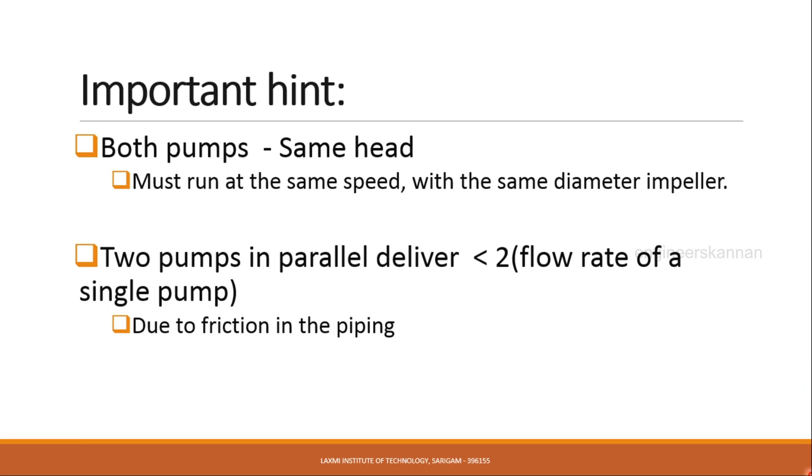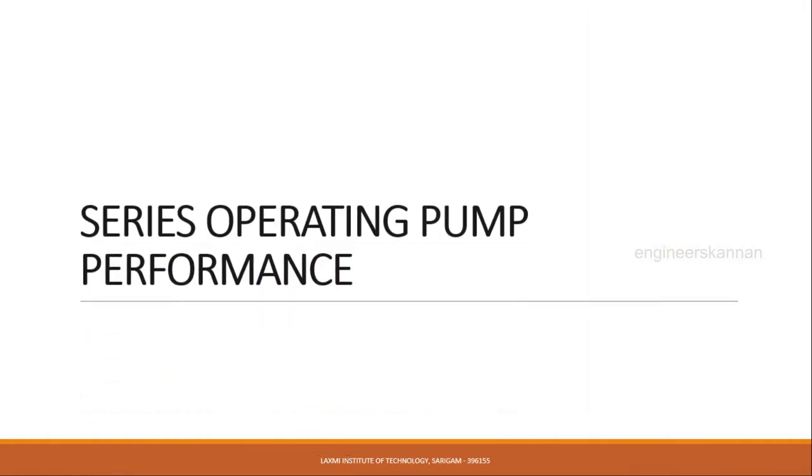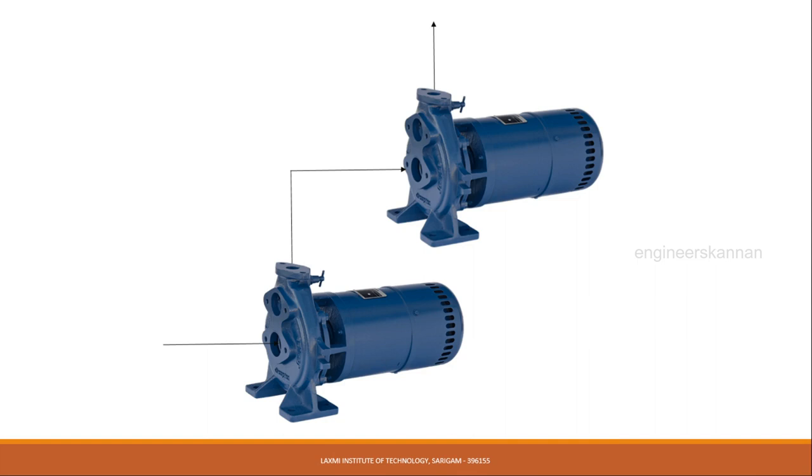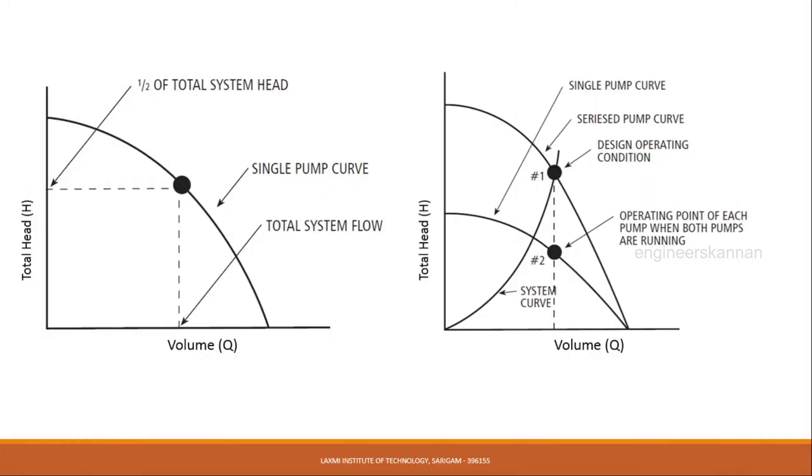Next is series operating performance of pumps. The image represents two pumps connected in series. The major reason pumps are connected in series is to increase the total head delivered, whereas volume remains unchanged. The performance curve clearly indicates that a single pump produces lesser total head, whereas two pumps together can increase the total head from point A to point B.